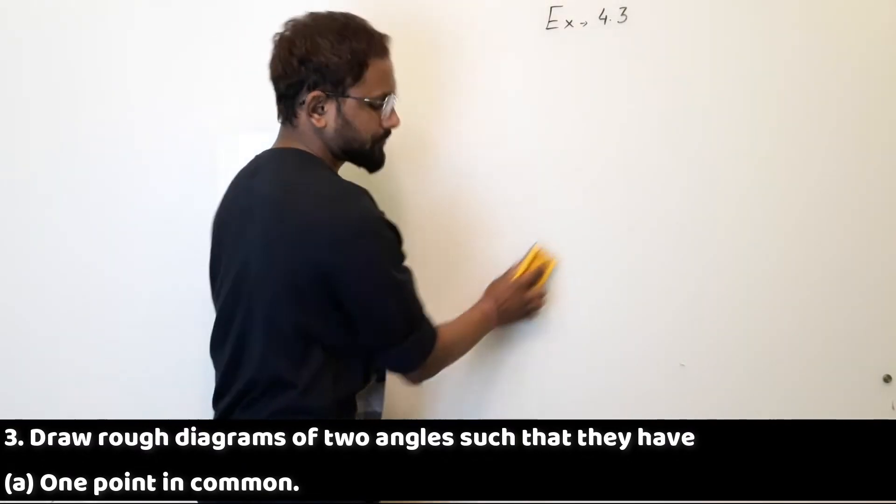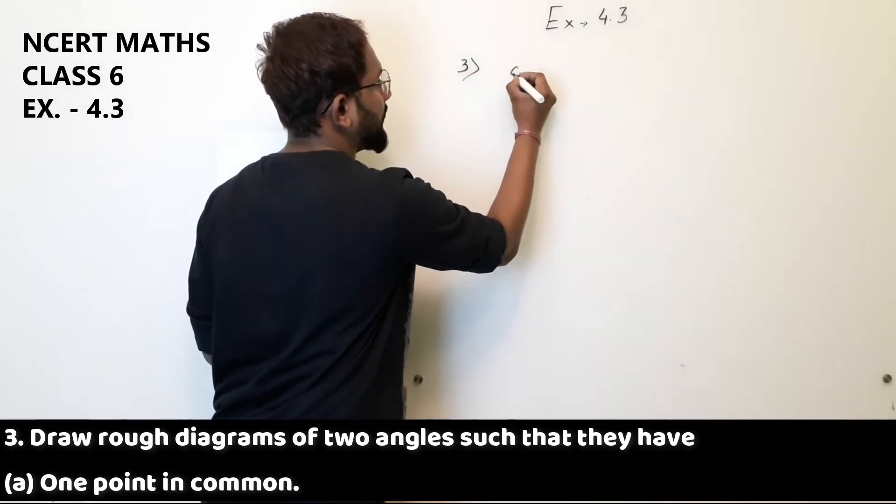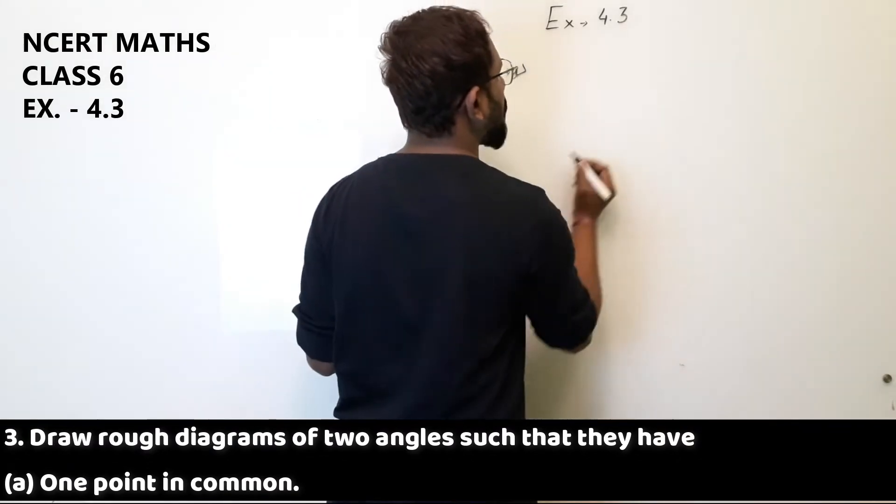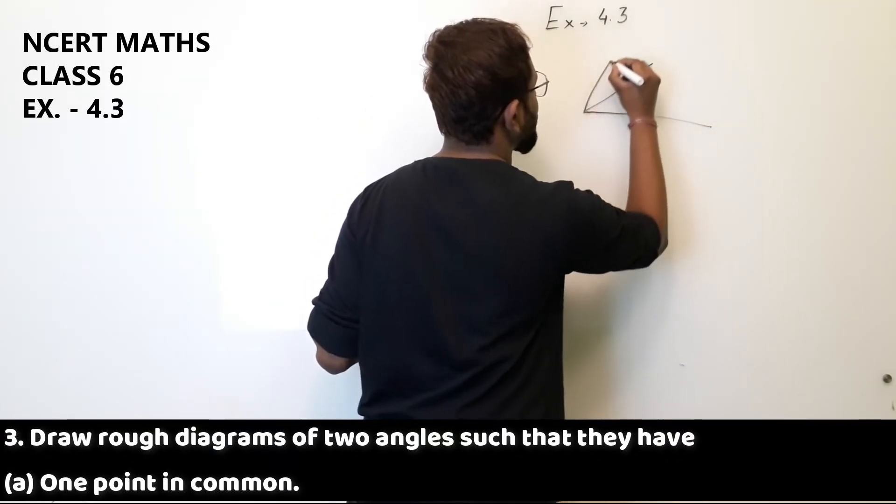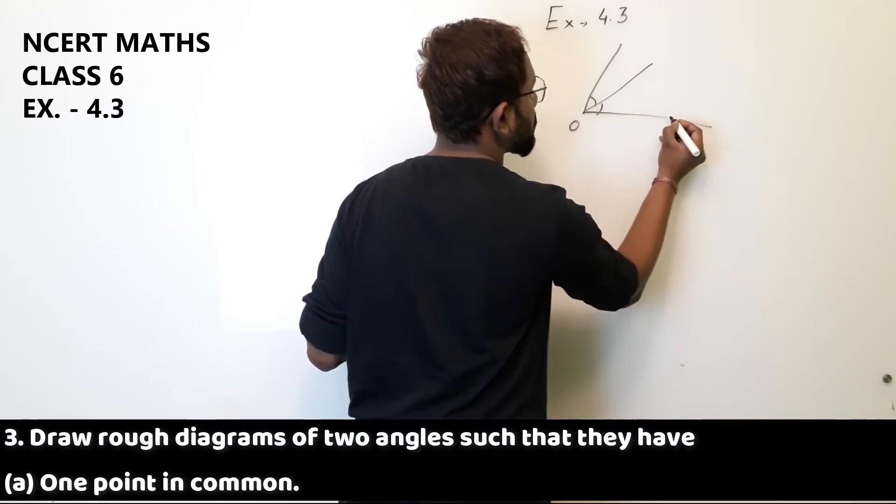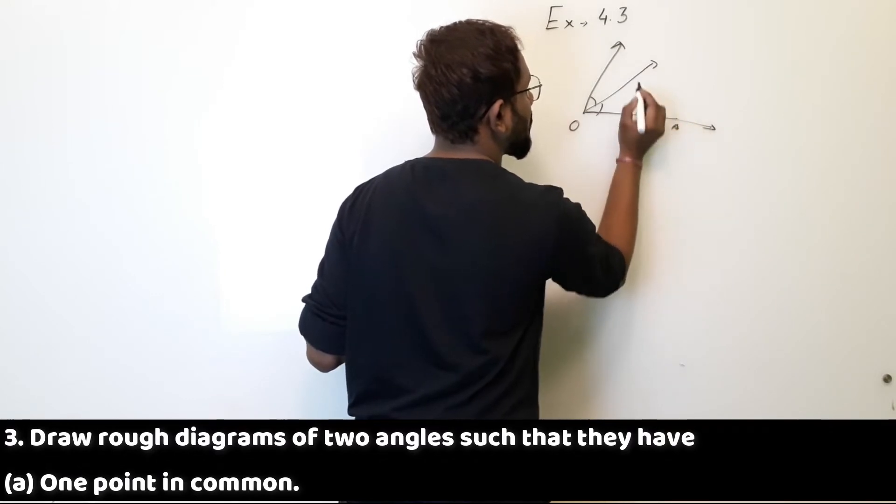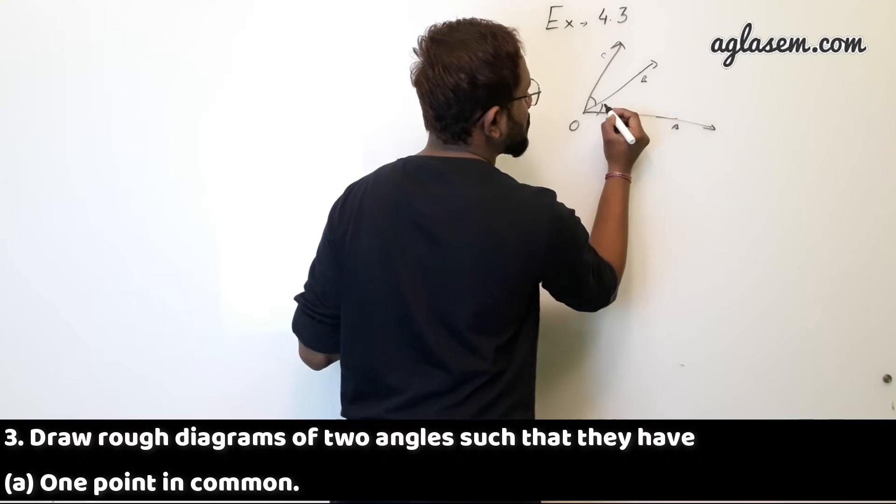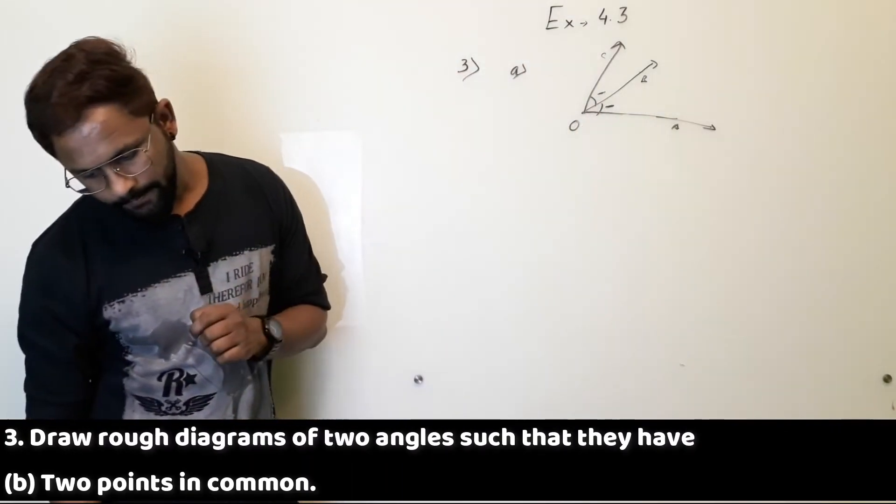Third question part A, one point in common. Two angles having one point in common. So this is one angle and this can be the second one, this angle and this angle having one point in common. Say this is A, B, this is C. So these two angles, this one and this one, has O as common.